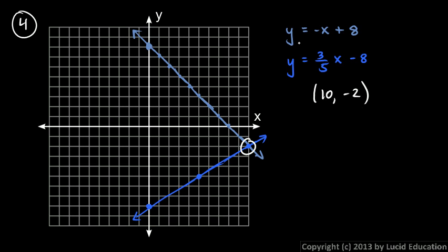So let's check that. We'll put those x and y values into each equation. Okay, this one first. Put in negative 2 for y equals negative x, that's negative 10 plus 8. And is that true? Negative 2 is negative 10 plus 8, so that's good.